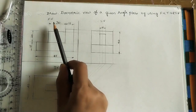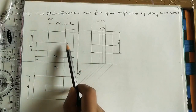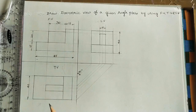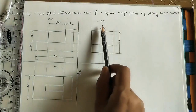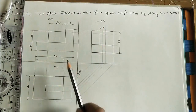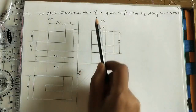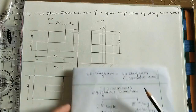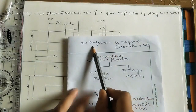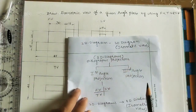Here, front view — in shortcut form they have written FV. This is the front view diagram, a 2-dimensional diagram. This is the top view and this is the side view. So 3 views have been given. By using these 3 views we need to do the isometric view. We have to convert the 2D diagram into a 3D diagram — that is the isometric view.